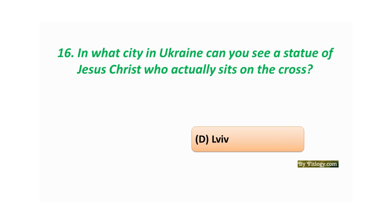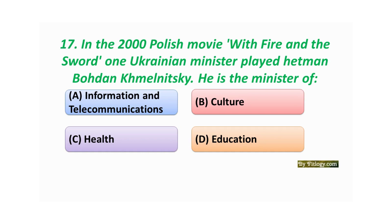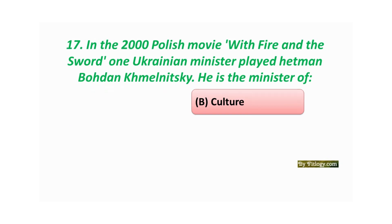Question number seventeen: In the 2000 Polish movie 'With Fire and Sword,' one Ukrainian minister played headman Bohdan Khmelnytsky. He is a minister of which department? Option A: Information and Telecommunication. Option B: Culture. Option C: Health. Option D: Education. The correct answer is Option B: Culture.